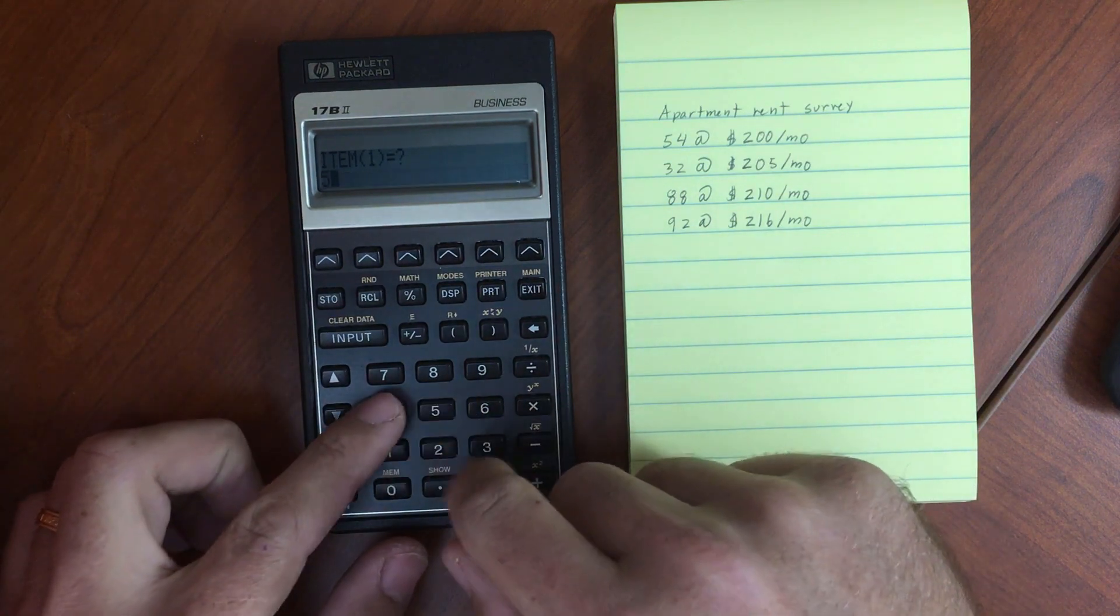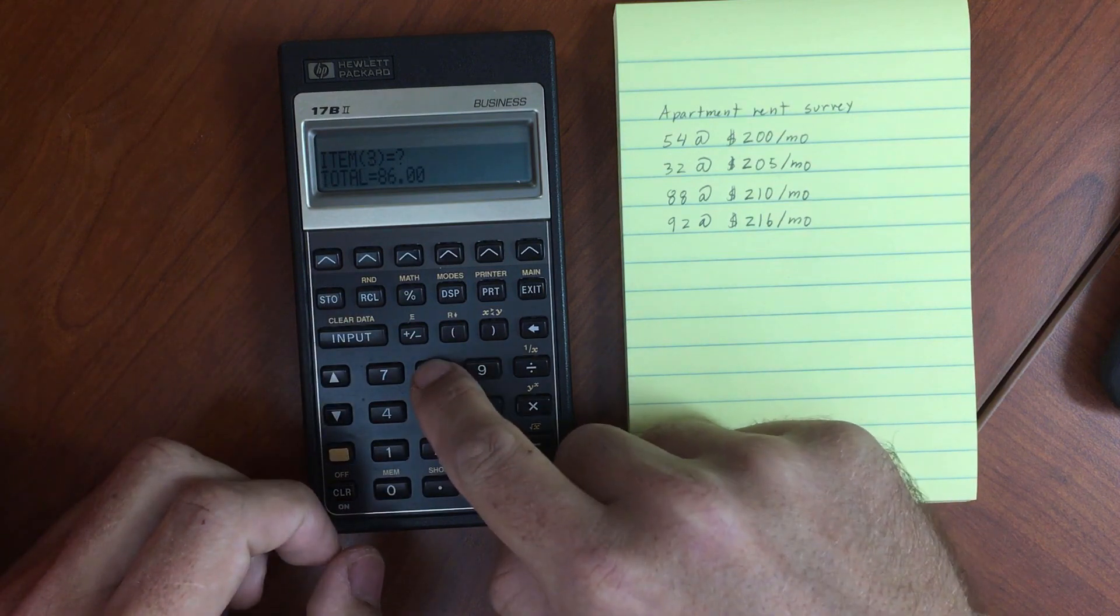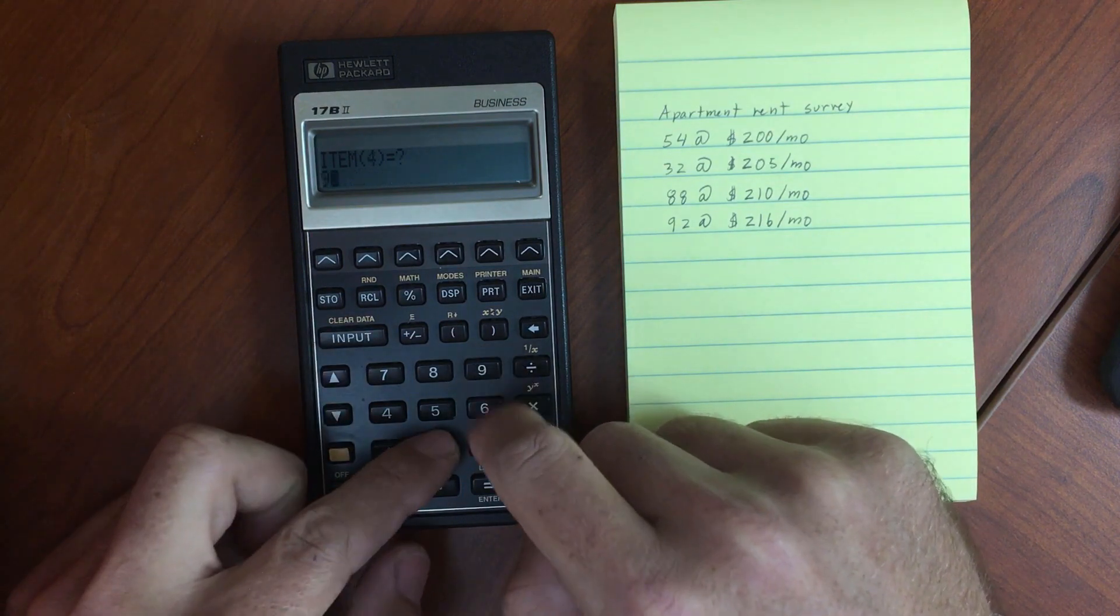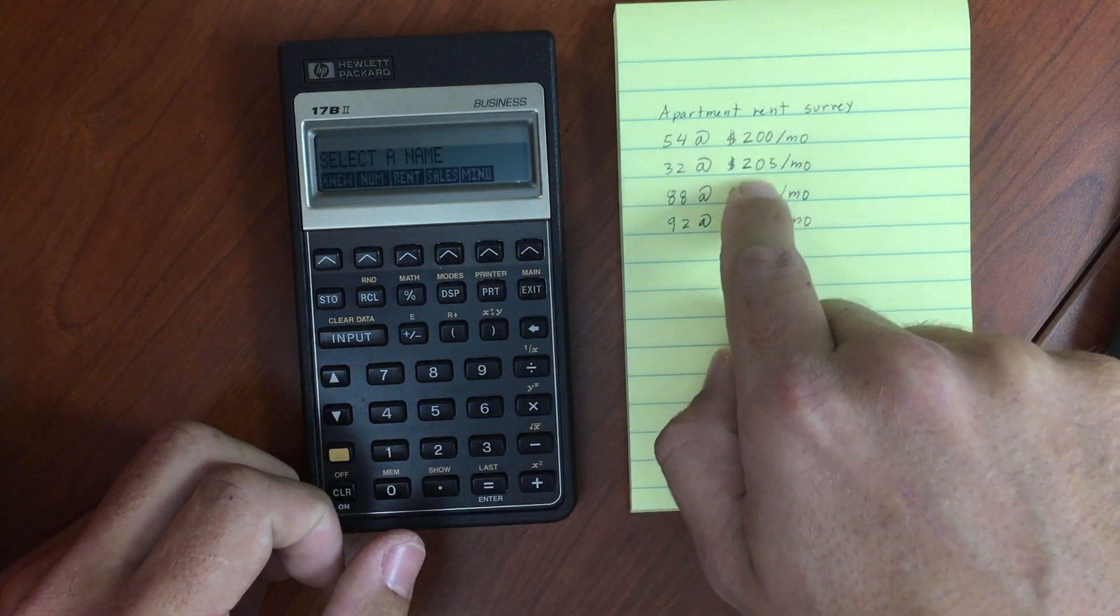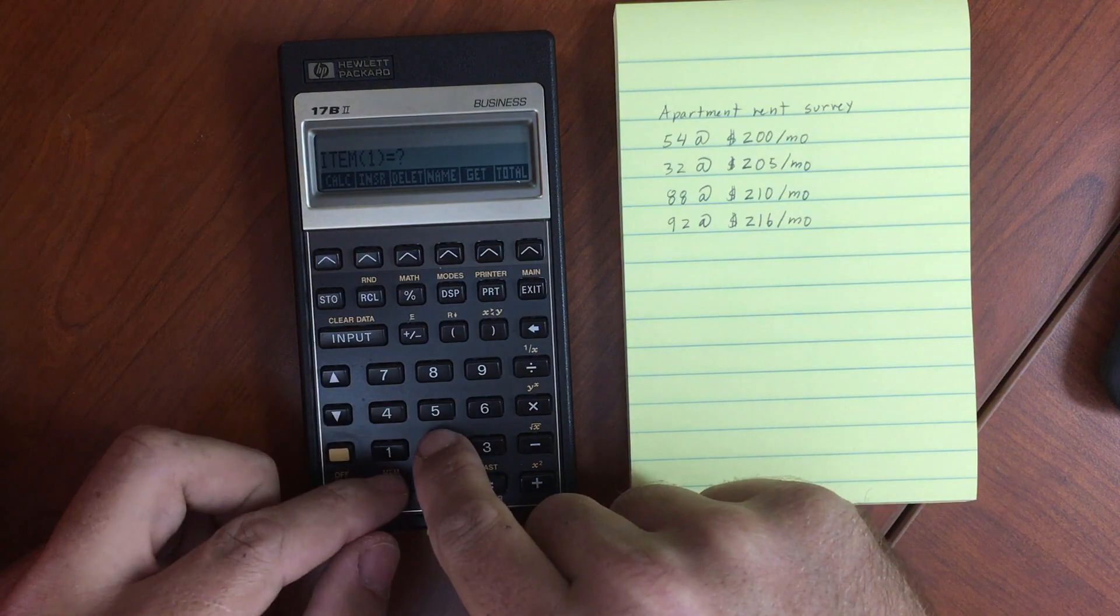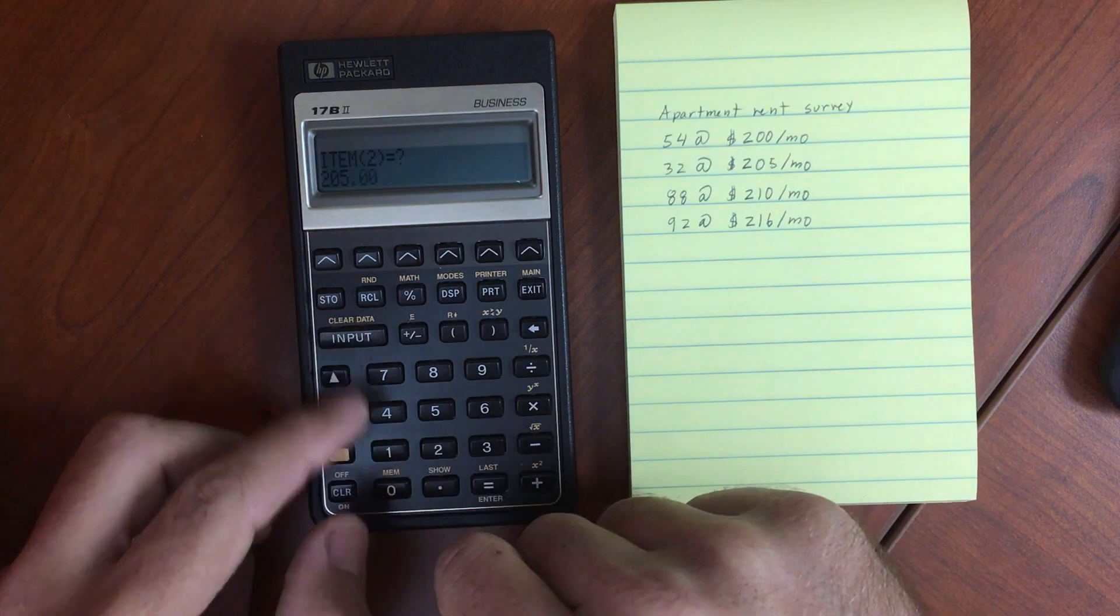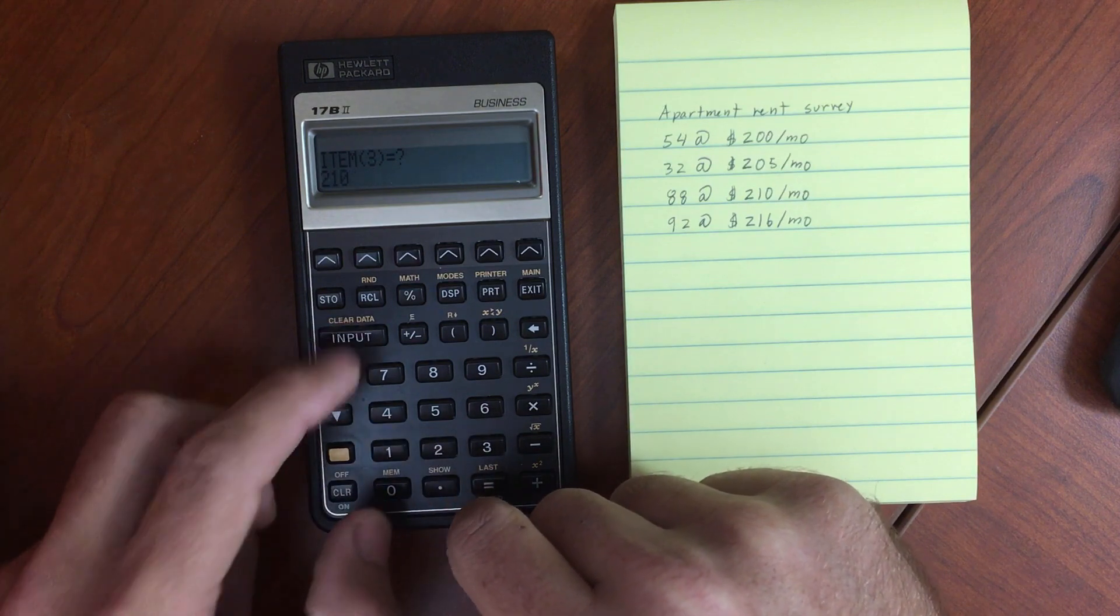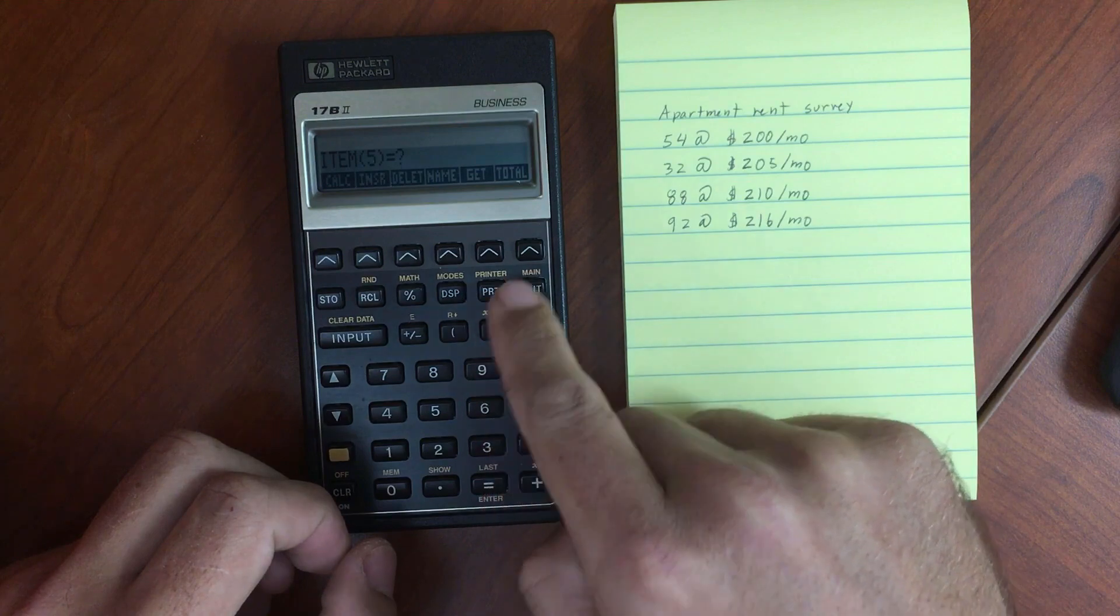So we are going to weight these. So let's enter in 54 for our first item, 32 for our second, 88 and 92. All right. Let's get our dollar, the rent amount, and we'll go 200, 205, 210, and 216. All right. So those are our four items in each list.